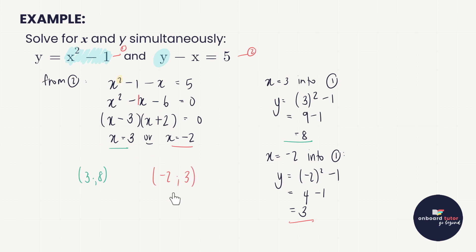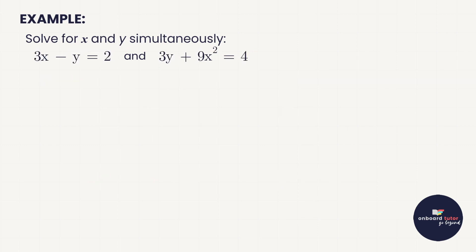This notation is particularly useful when working with graphs. If they haven't asked for coordinate form you don't have to give it, but it is always helpful to write: x equals three, y equals eight, or x equals minus two and y equals three. Here's another example. Again we take our two equations and straight away call this equation one and this equation two.